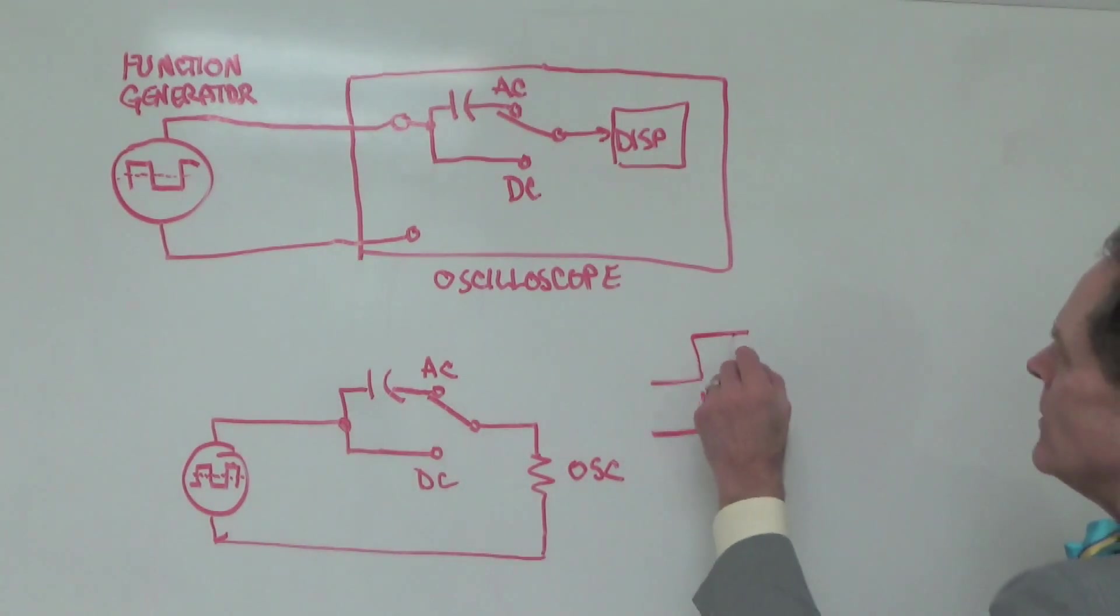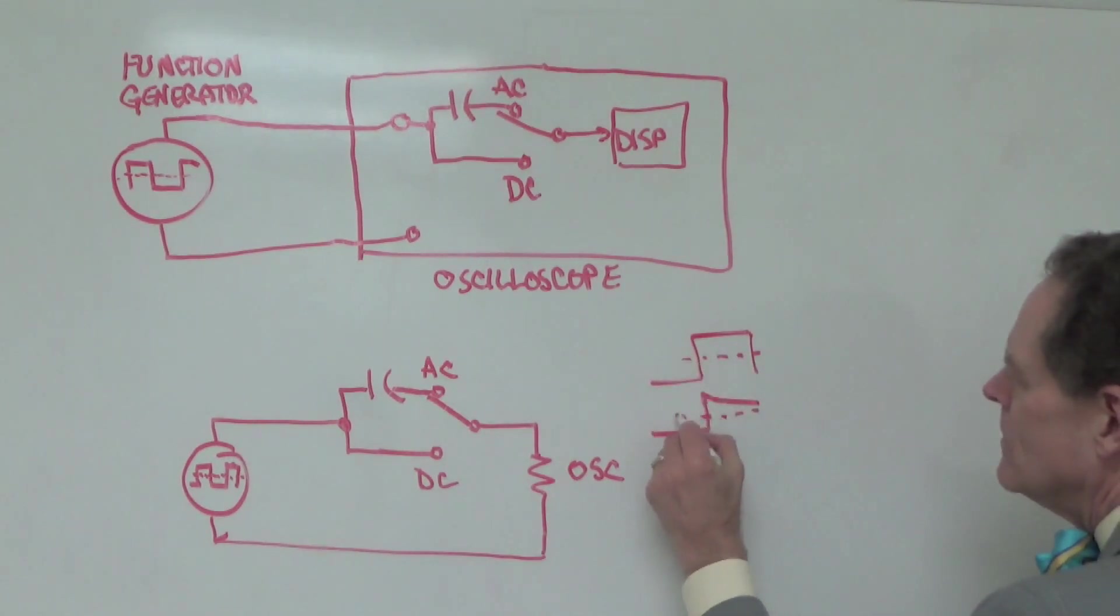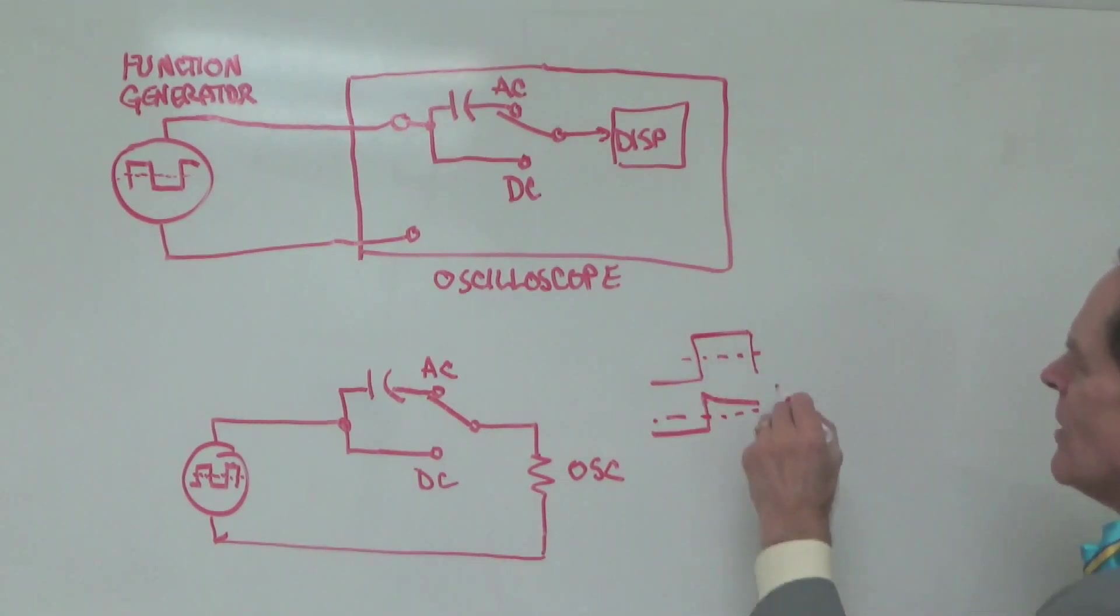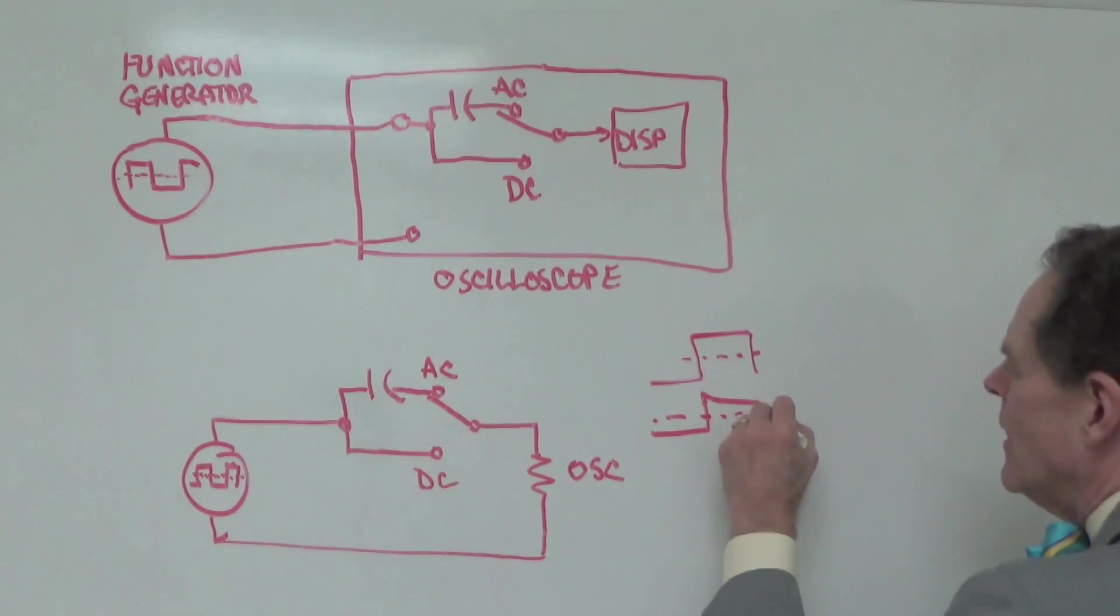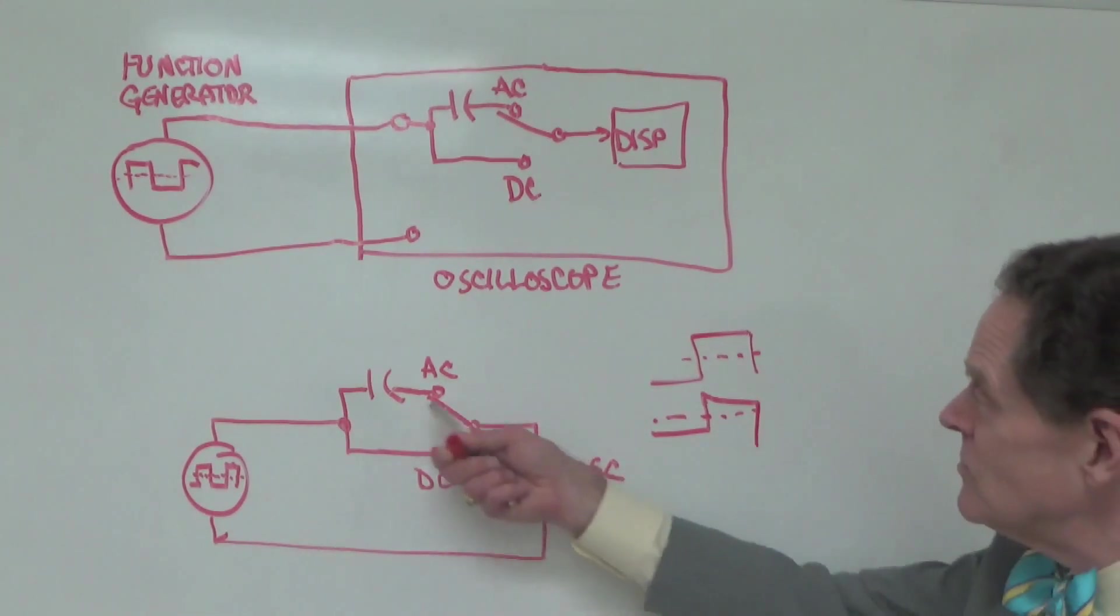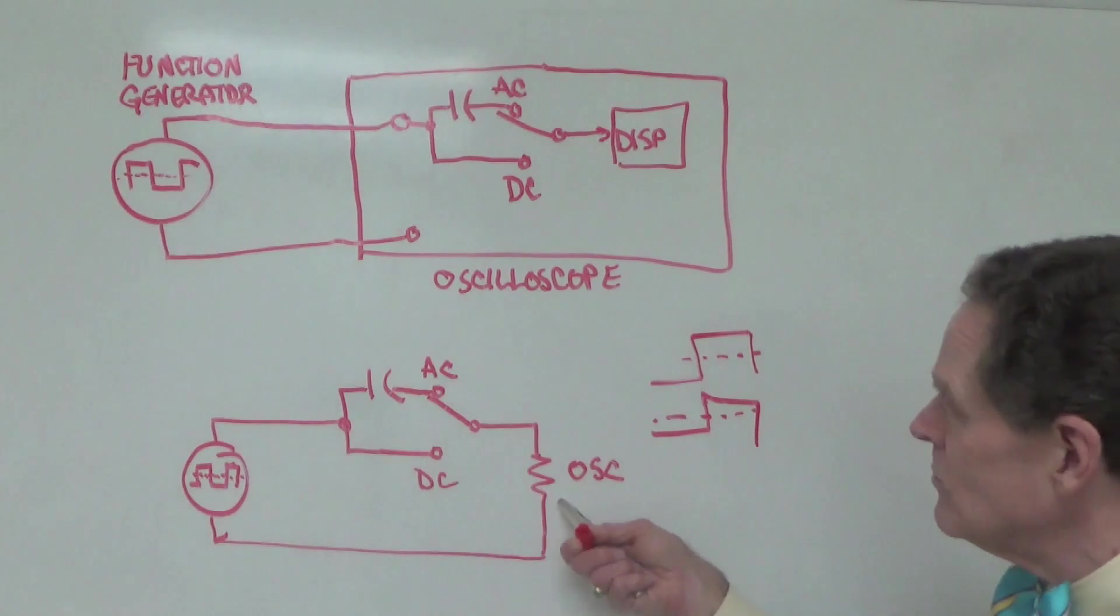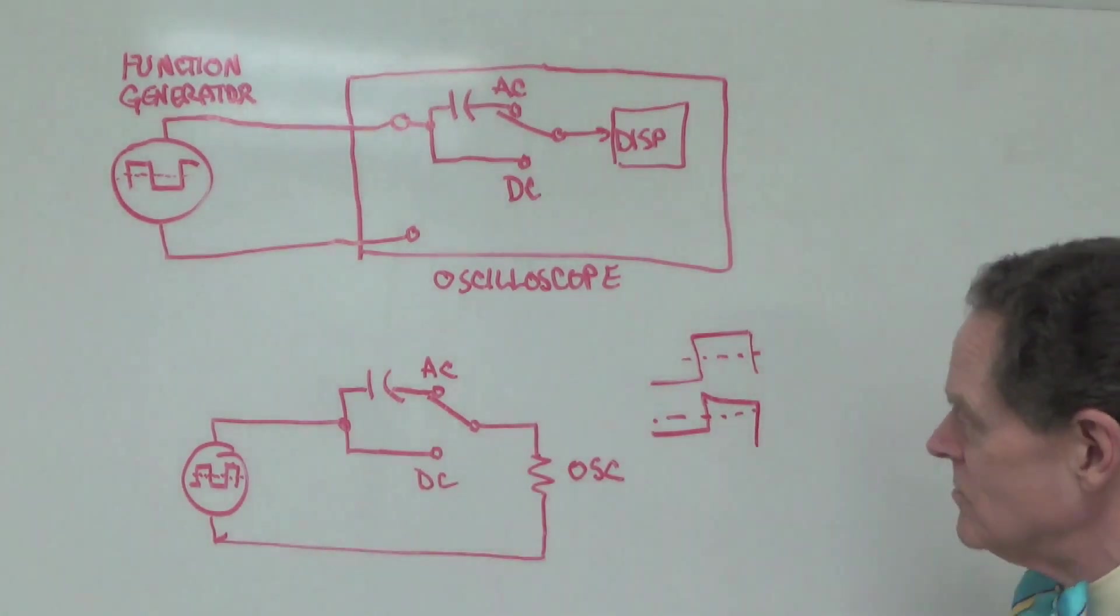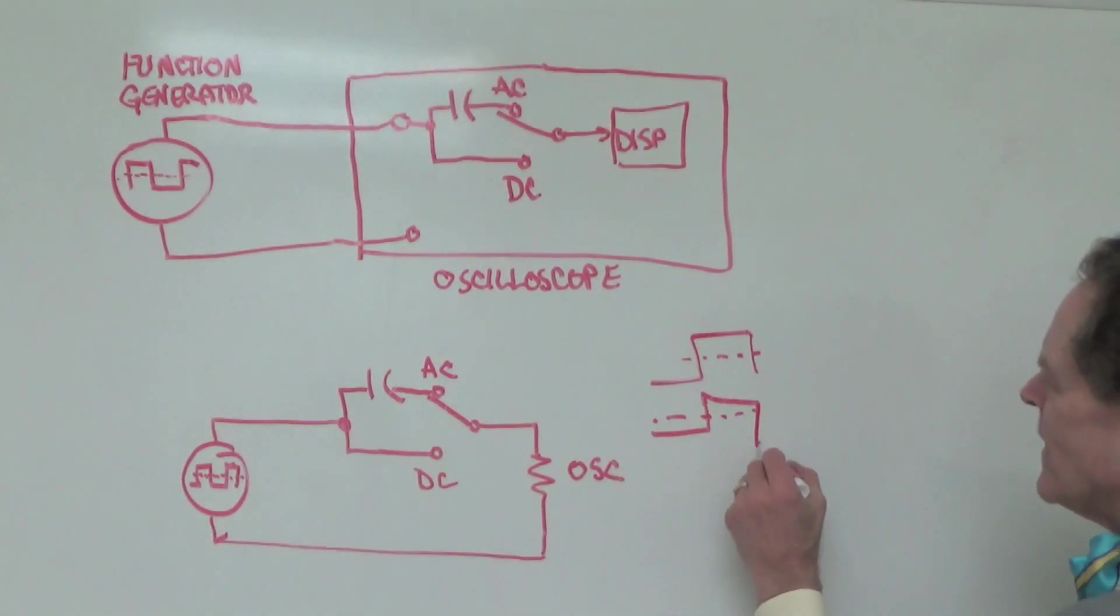And then what happens? Well, the output drops back to a negative value. If this is zero here, this would be zero. It goes back to some negative value. And again, the capacitor acts like a short. And so, the voltage across the oscilloscope follows it right down because it's a short. And so, whatever is happening with the voltage over here is shown right here.